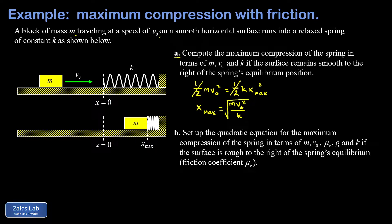And I end up with a maximum compression of the square root of m v0 squared over k. It's also possible to pull out a factor of v0 from inside the square root, and it looks a little nicer this way. That's v0 square root of m over k.